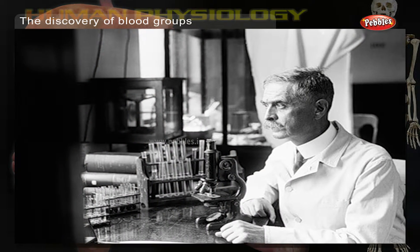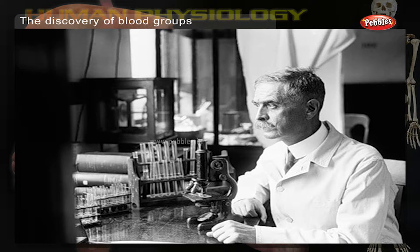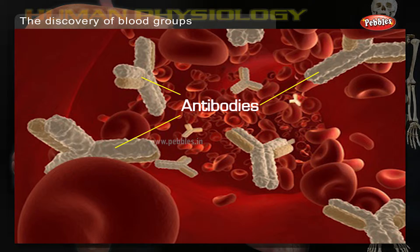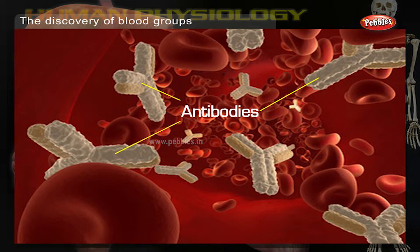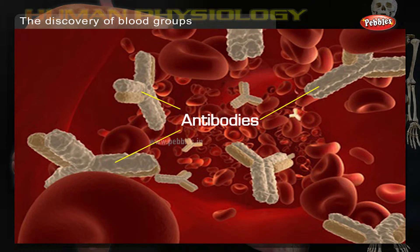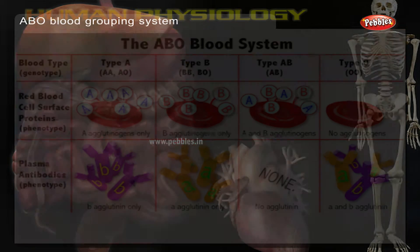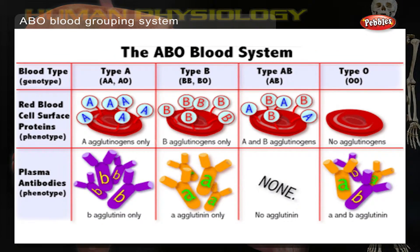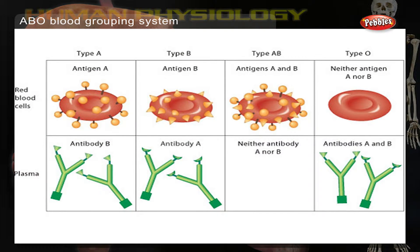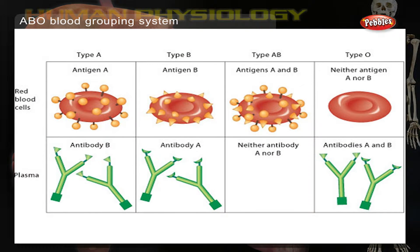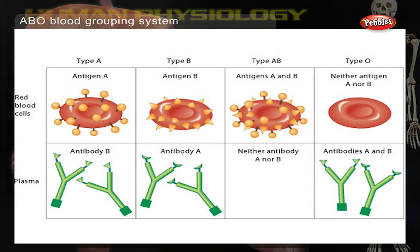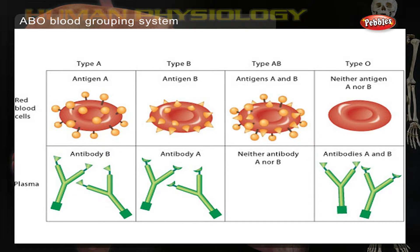Carl Landsteiner discovered that blood clumping was an immunological reaction which occurs when the receiver of a blood transfusion has antibodies against the donor blood cells. According to the ABO blood group system, there are four different kinds of blood groups: A, B, AB, or O.